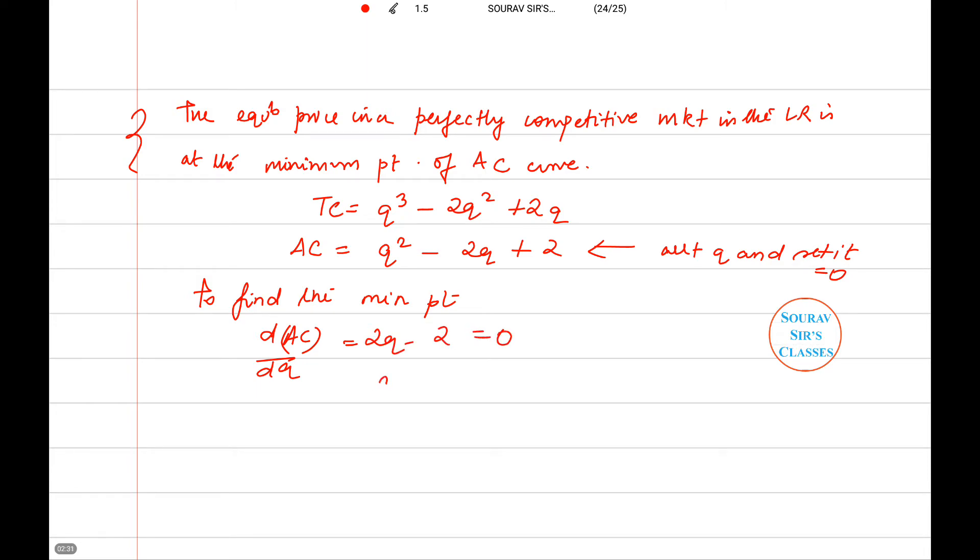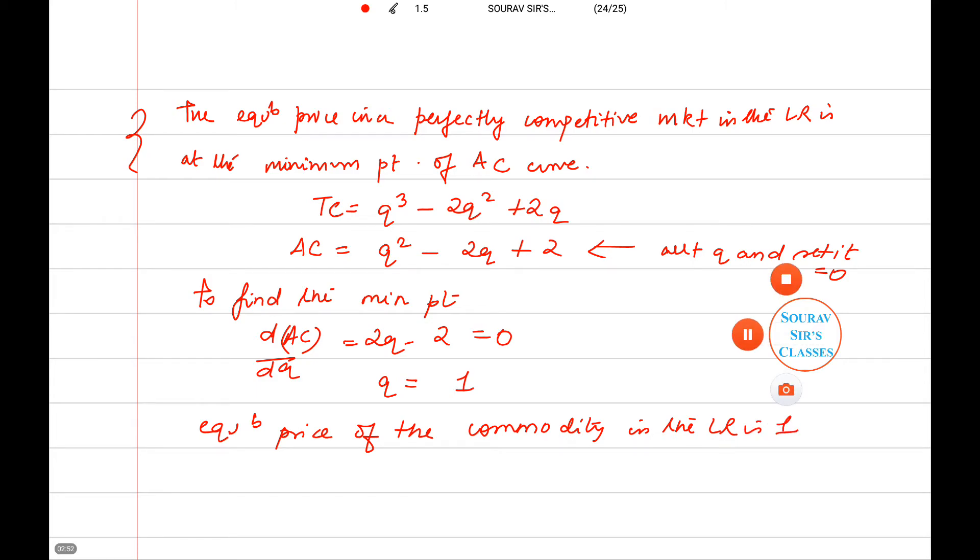So q will be equal to 1. So the equilibrium price of the commodity in the long run is 1. We need to pick the correct option, so C will be the correct answer to this particular question.